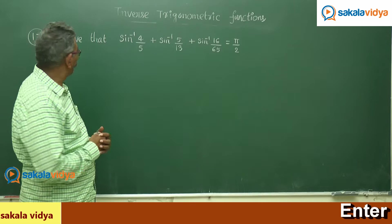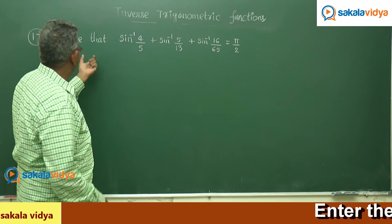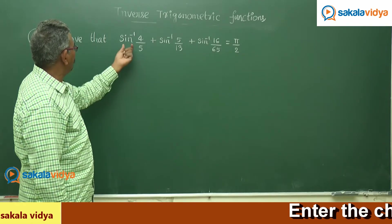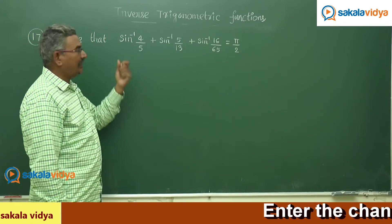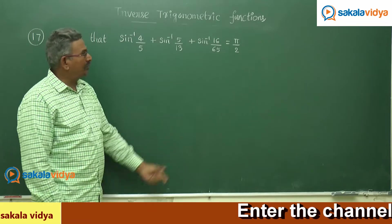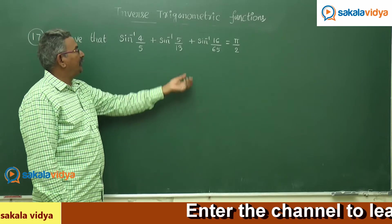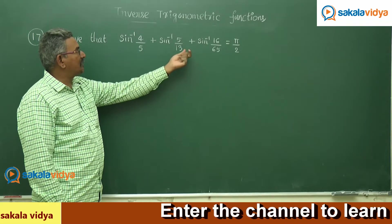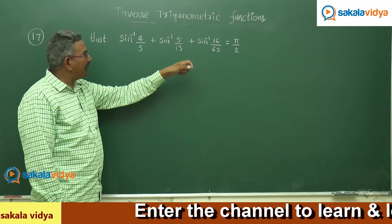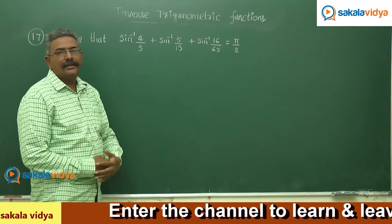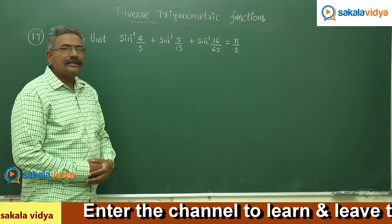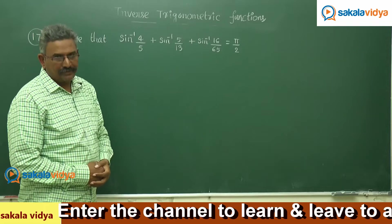Let us move to the next problem. Prove that sin inverse 4/5 plus sin inverse 5/13 plus sin inverse 16/65 is equal to π/2.